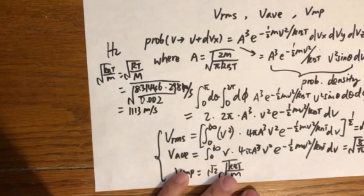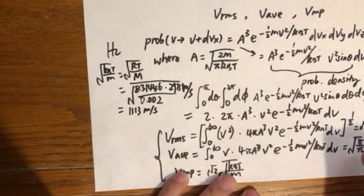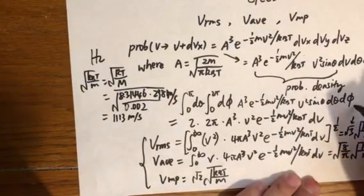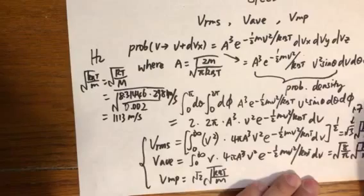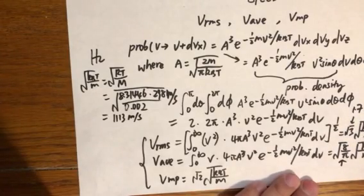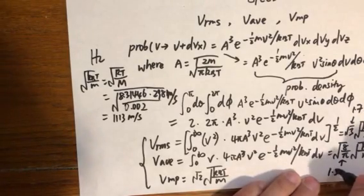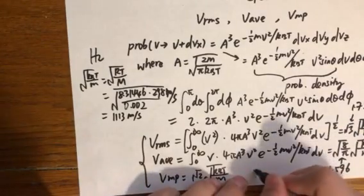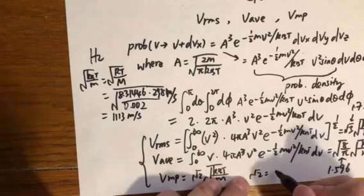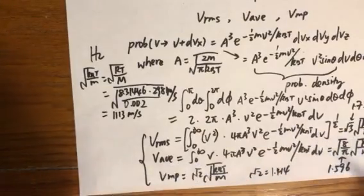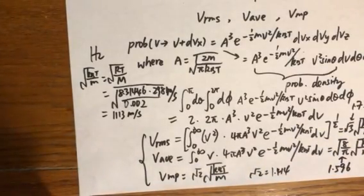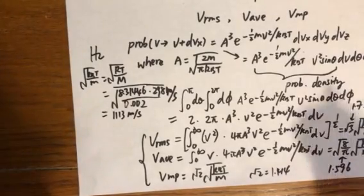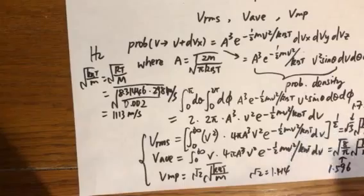Now we need to multiply that by square root of 3 or square root of 8 over pi or square root of 2. Square root of 3 is 1.732. Square root of 8 over pi is 1.596. And square root of 2 is 1.414. After we multiply the square root of kbT over m by these factors, we get the results.